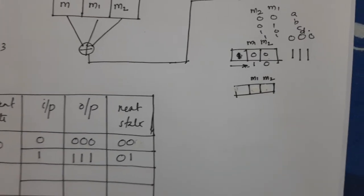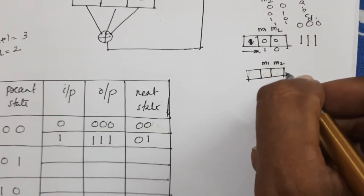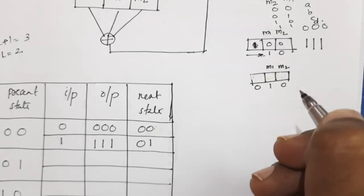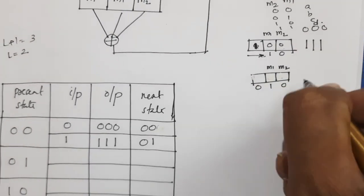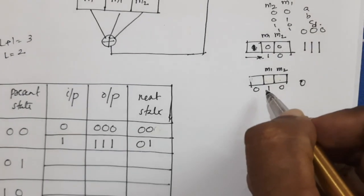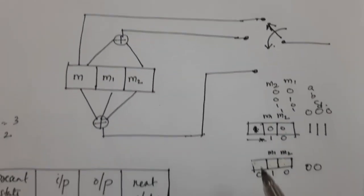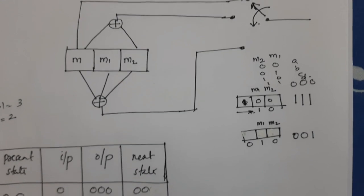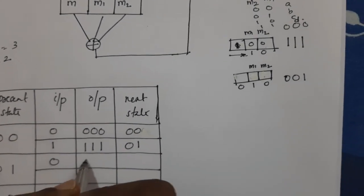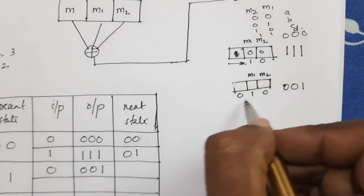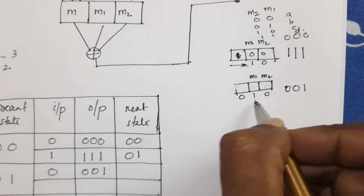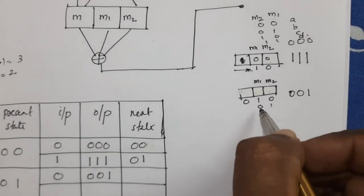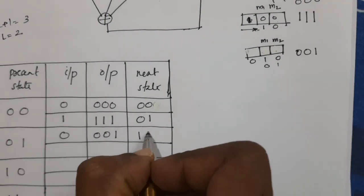When the present state is 01 (B), meaning M2 is 0 and M1 is 1, if input is 0, the output is: 0, then 0 plus 0 equals 0, then 0 plus 1 plus 0 equals 1. So output is 0, 0, 1. The next state, after one shift, is 10, which means M2 equal to 1 and M1 equal to 0, giving state C.